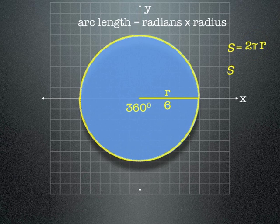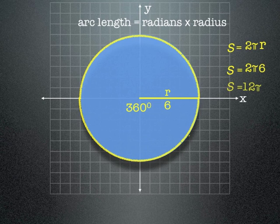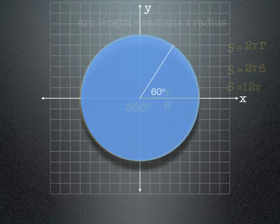So now we have s is the arc length is equal to 2 pi, we know the radius is 6, and 2 times 6 is 12 pi, so the circumference is equal to 12 pi.